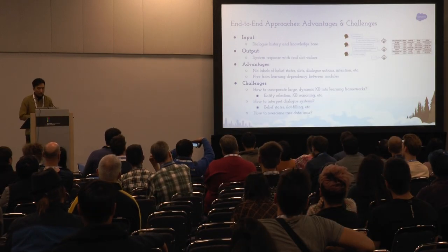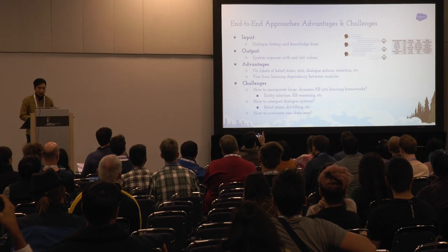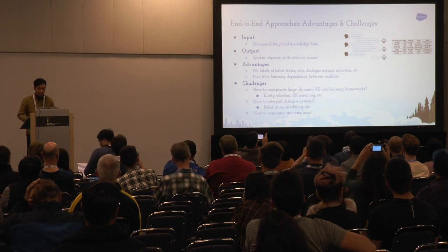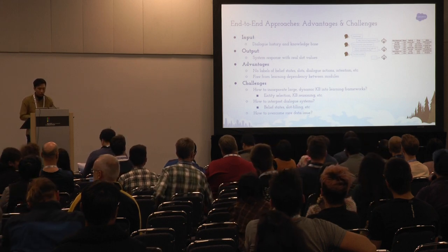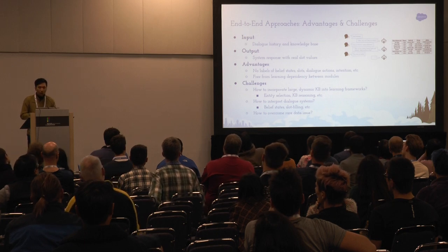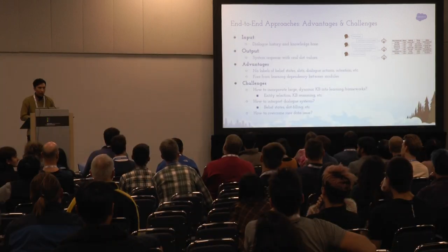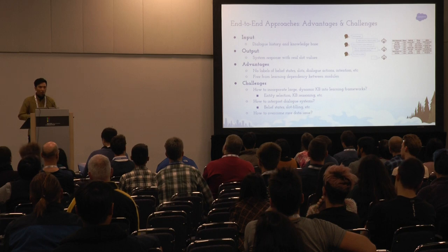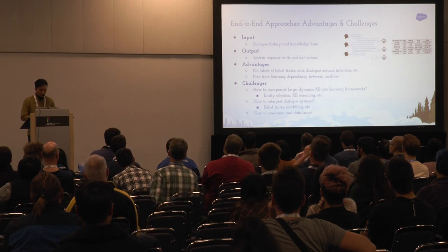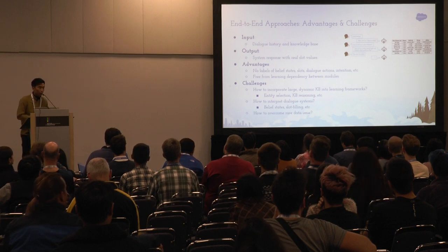An end-to-end approach has advantages but also new challenges. The input is plain text of dialogue history and a knowledge base, and we expect the output to directly generate the response with real slot values. We don't need labels for belief states, slots, dialogue actions, or intentions — we only need plain text, and we're free from learning dependencies between modules. But new challenges include how to incorporate a large, dynamic KB into a machine learning system effectively, whether we can interpret the end-to-end dialogue system like traditional belief state tracking, and whether we have enough data to train an end-to-end model.